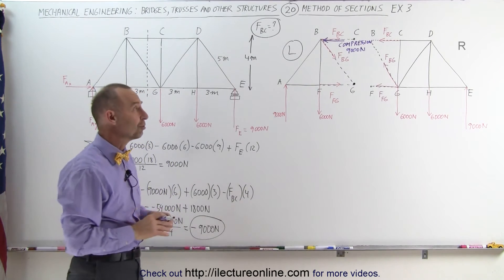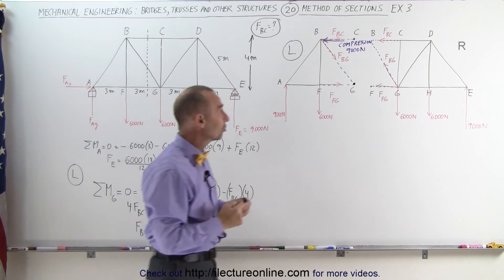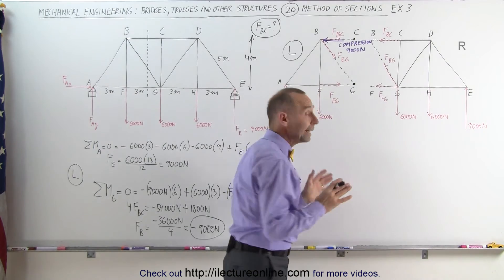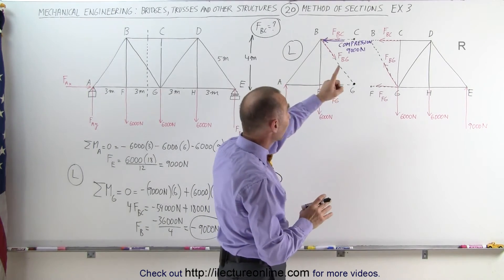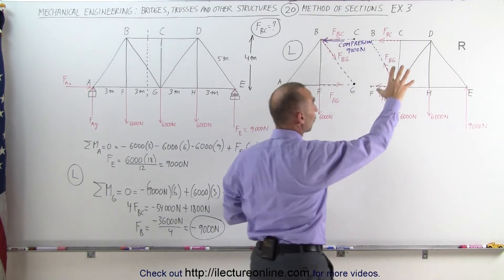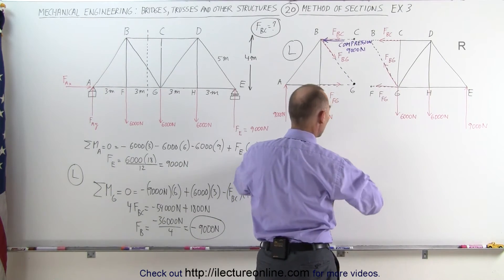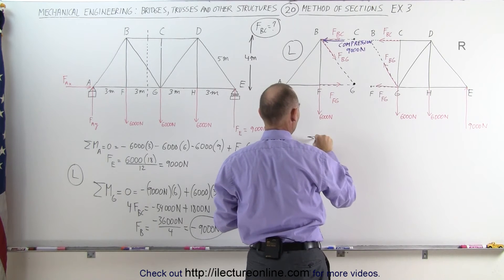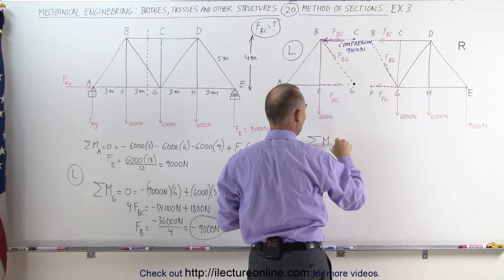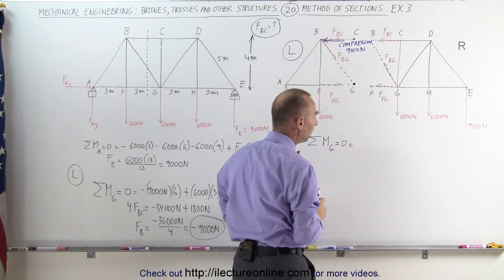Now calculating the force on the same member, FBC, let's use the right side section of that bridge. We're going to pick the point right here at G as the moment point. The sum of all the moments upon point G must equal zero. Let's add them all up.